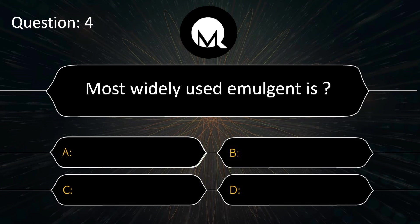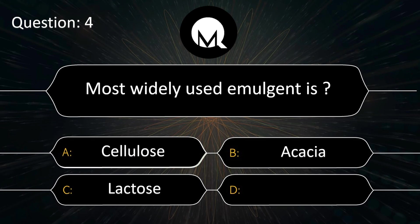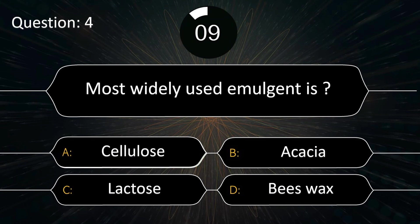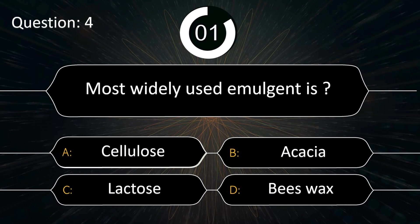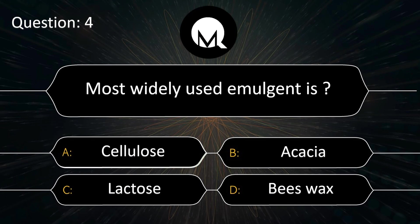The most widely used emollient is: cellulose, acacia, lactose, or beeswax? Answer is acacia.